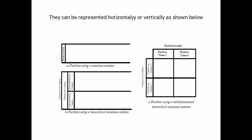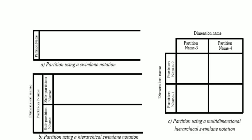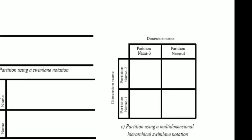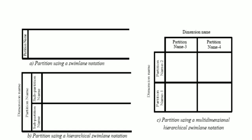This is the diagram you can show. They can be represented horizontally or vertically as shown in this particular figure. Here is a partition using hierarchical, and in the next, partition using multi-dimensional hierarchical swim lane notation.